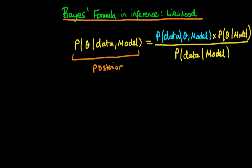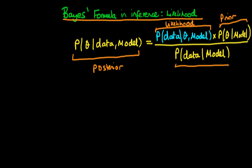We know from Bayes' rule that this is equal to something called the likelihood, which is what we're going to talk about today, times something on the numerator called the prior, which represents our prior beliefs conditioned on our particular model choice as to the values of theta. We divide that by something we'll call the probability of the data, or just the denominator.